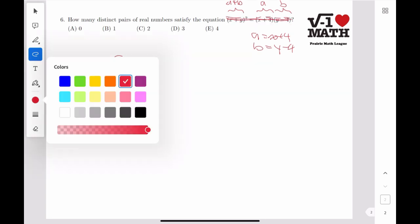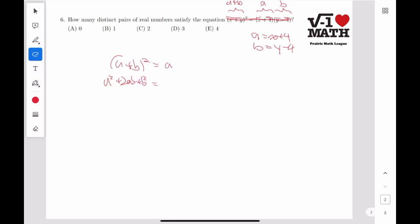But a plus b squared is equal to ab, actually, which gets us a squared plus 2ab plus b squared is equal to ab, or a squared plus ab plus b squared is equal to 0.